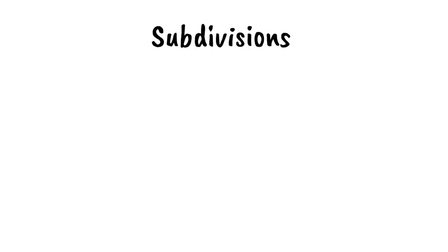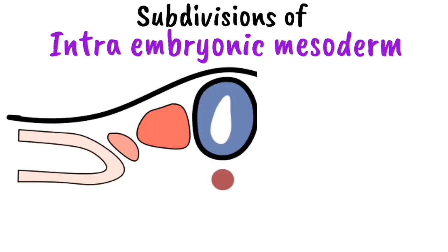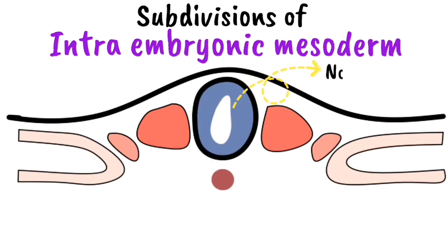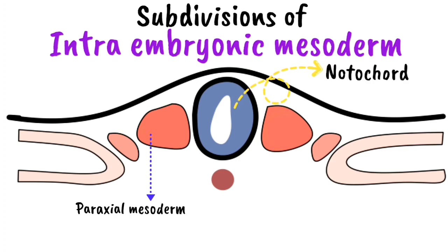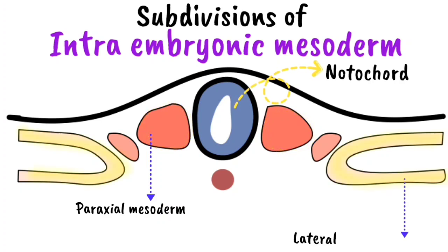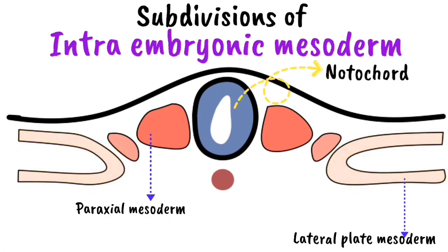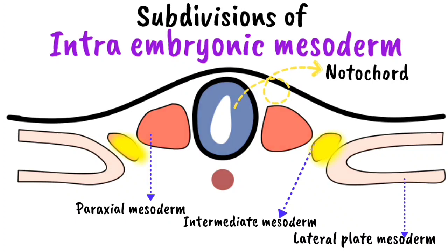The subdivisions of the intraembryonic mesoderm are: the paraxial mesoderm, which is the thick mesoderm on either side of the notochord; the lateral plate mesoderm, which is farther away laterally and is comparatively thinner; and the intermediate mesoderm, which is situated between these two.